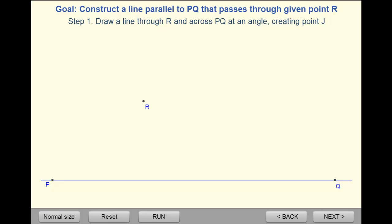We're going to do a construction of a parallel line and then prove why that construction works. This is from mathopenref.com. I'll provide a link to it in the description. So we want to create a parallel line to PQ and we'll have it go through point R.